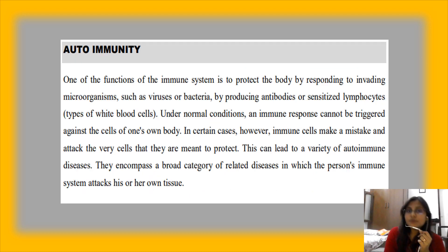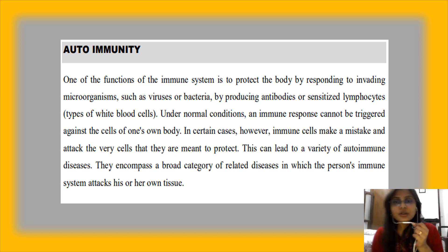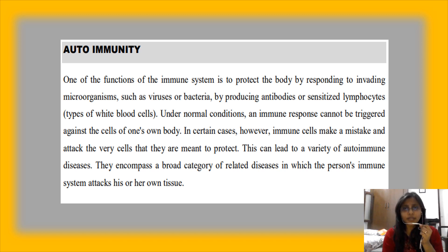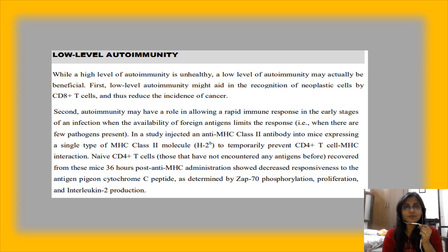One of the functions of the immune system is to protect the body by responding to invading microorganisms like bacteria and viruses, and to produce antibodies — as covered in the very first lecture. But sometimes the immune system is triggered against our own body, where cells make a mistake and attack the very cells they are meant to protect. This leads to autoimmune diseases, where a person's immune system attacks his or her own tissue.